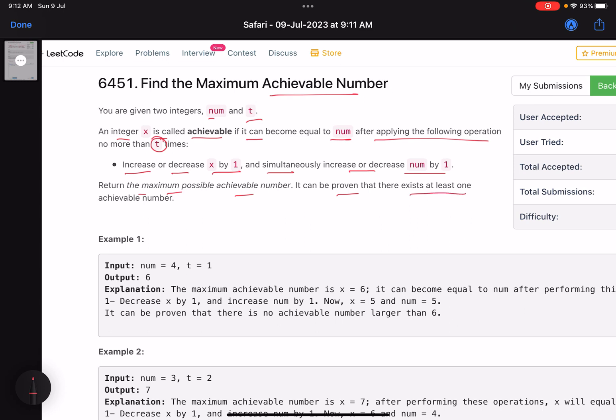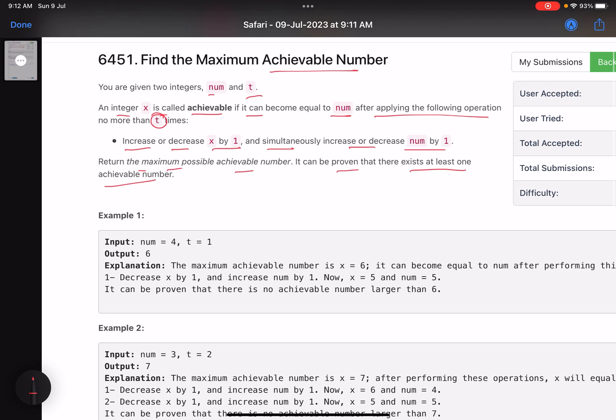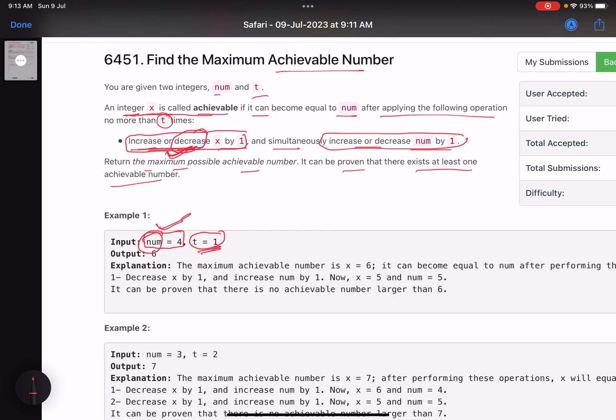It can be proven that there exists at least one achievable number. Let's look into the example. This is one of the numbers I have, and this is the maximum number of operations I can perform. An integer x is achievable if it can become equal to num after applying this operation. Since I want to find the maximum number, that means I'll always decrement x and always increment num.